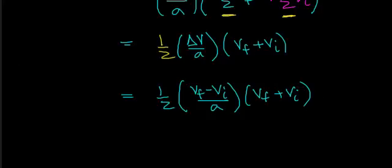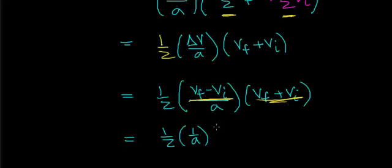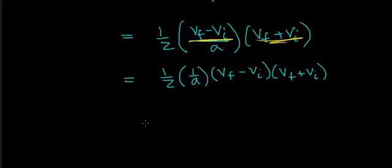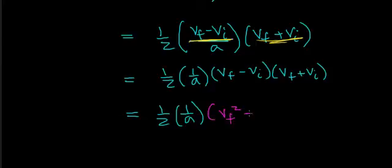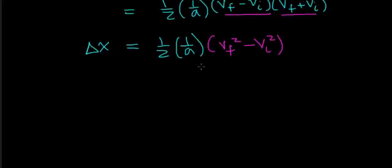What you should see is that this is now the difference of two squares. So you can rewrite this as one-half times one-over-a, factoring out the one-over-acceleration term, times v final minus v initial times v final plus v initial. That equals one-half of one-over-the-acceleration, times v final squared minus v initial squared. Recalling that this is all equal to the change in distance, you can now multiply both sides of this equation by two times the acceleration.